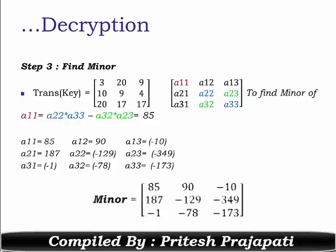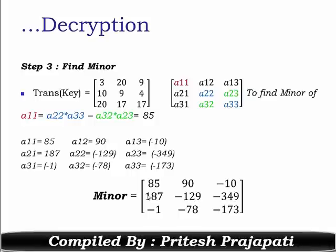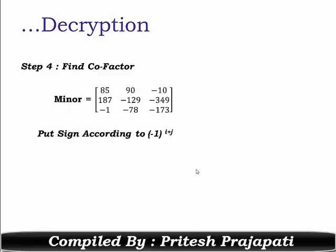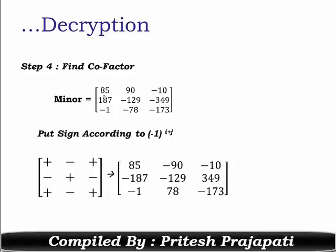Your minor matrix equals values starting with 85, 19, and corresponding values — verify these by manual calculation. To find the cofactor, apply the sign according to minus 1 raised to (i plus j), where i is the row and j is the column. For i=1, j=1: minus 1 raised to 2 gives a plus sign. The sign pattern is plus, minus, plus, minus, plus, minus, plus, minus, plus.